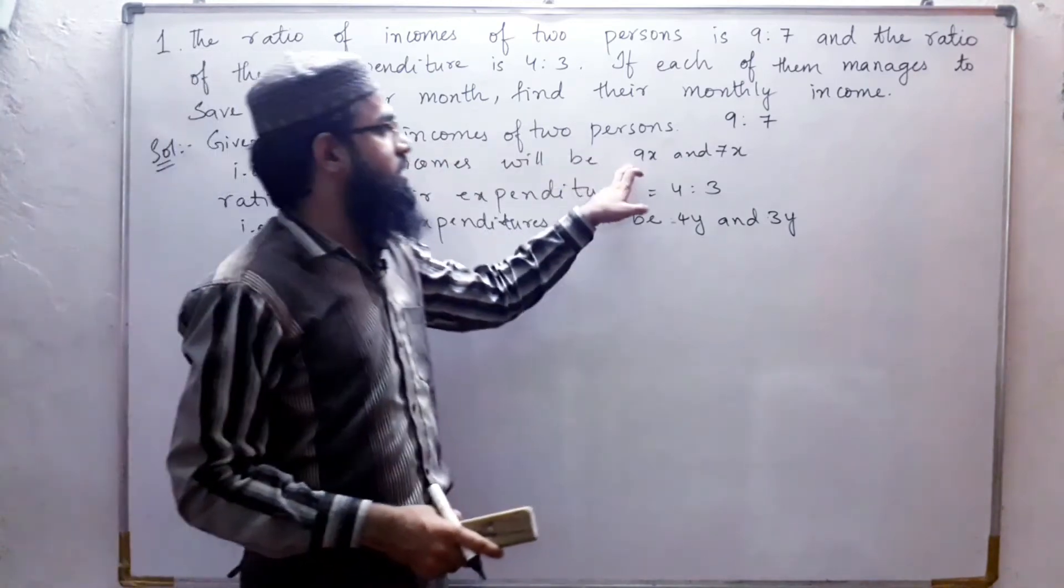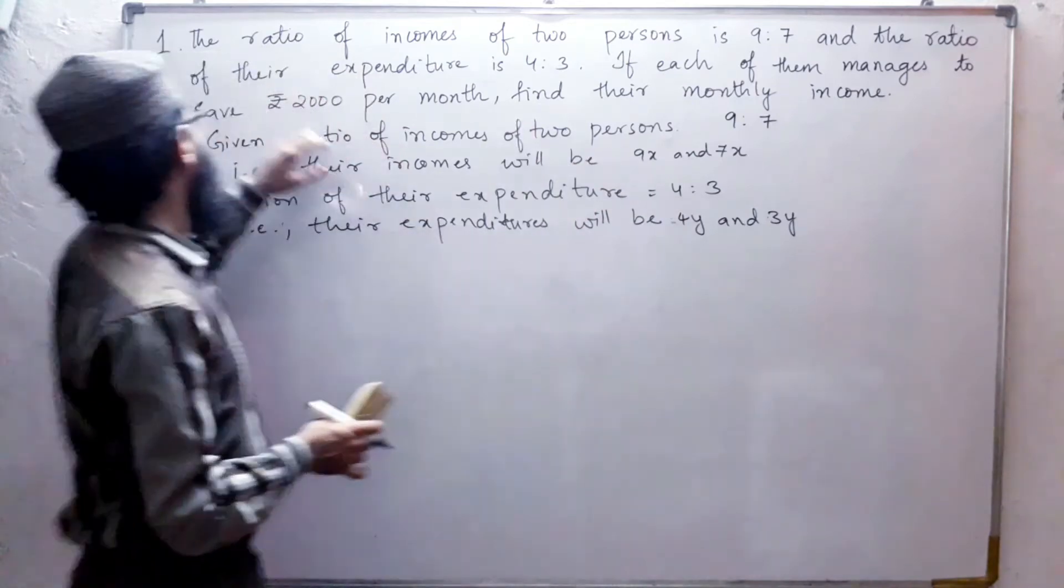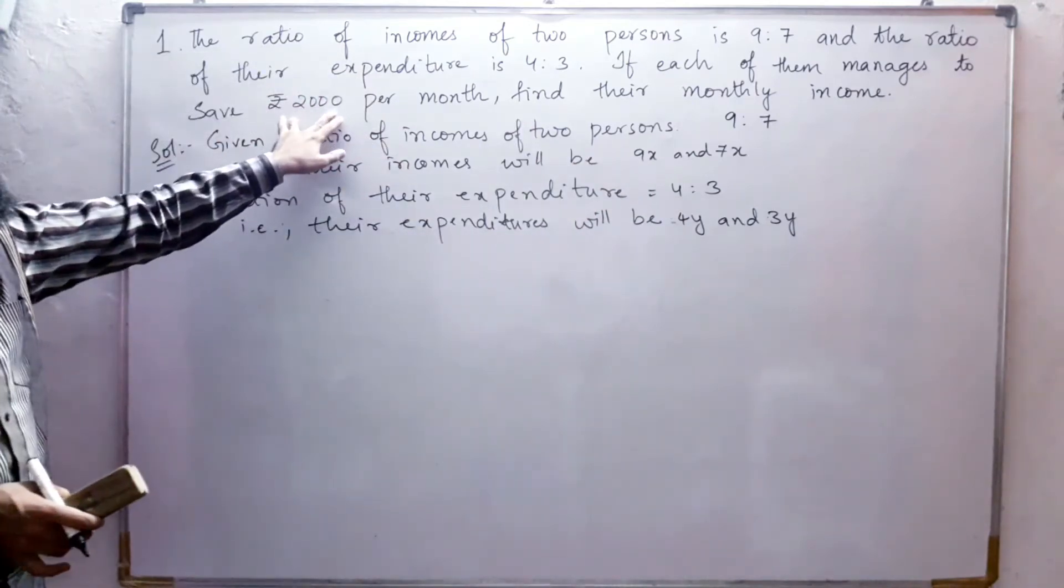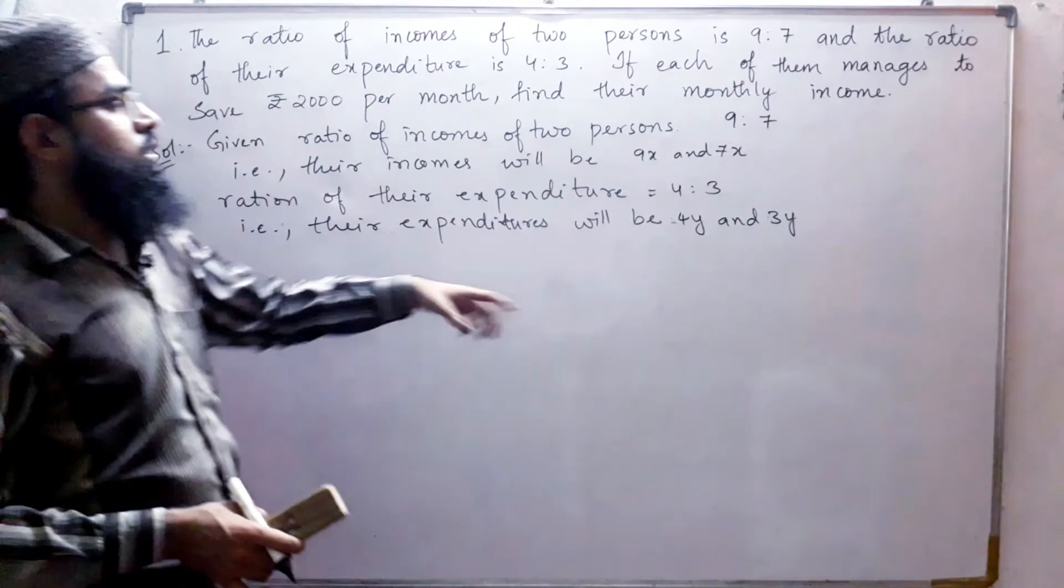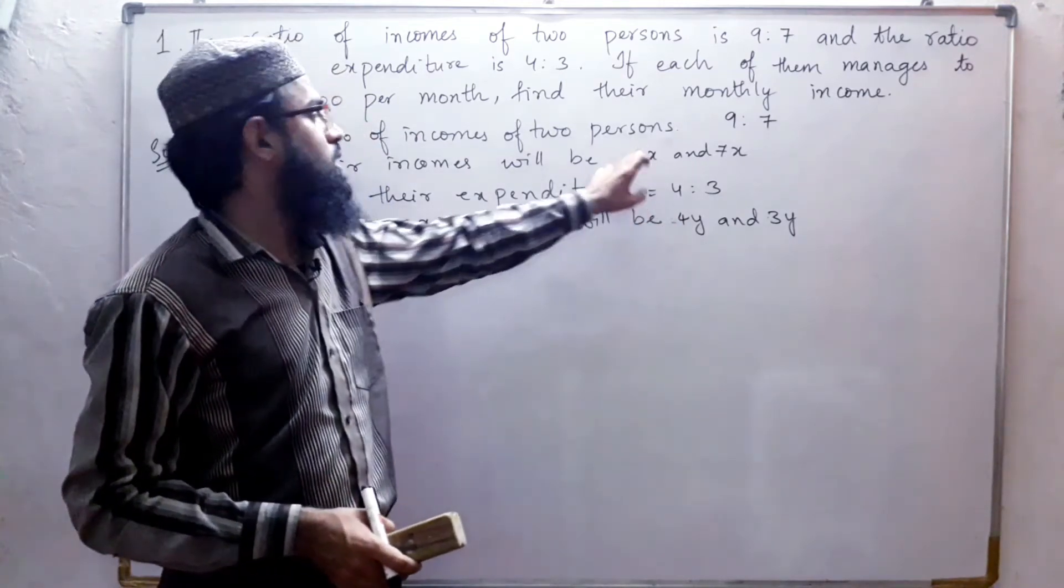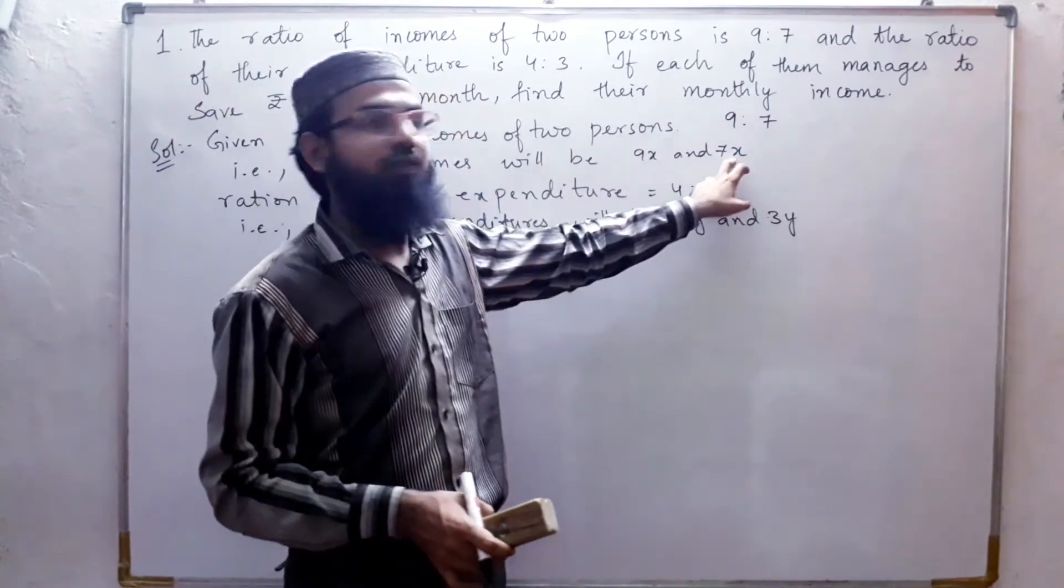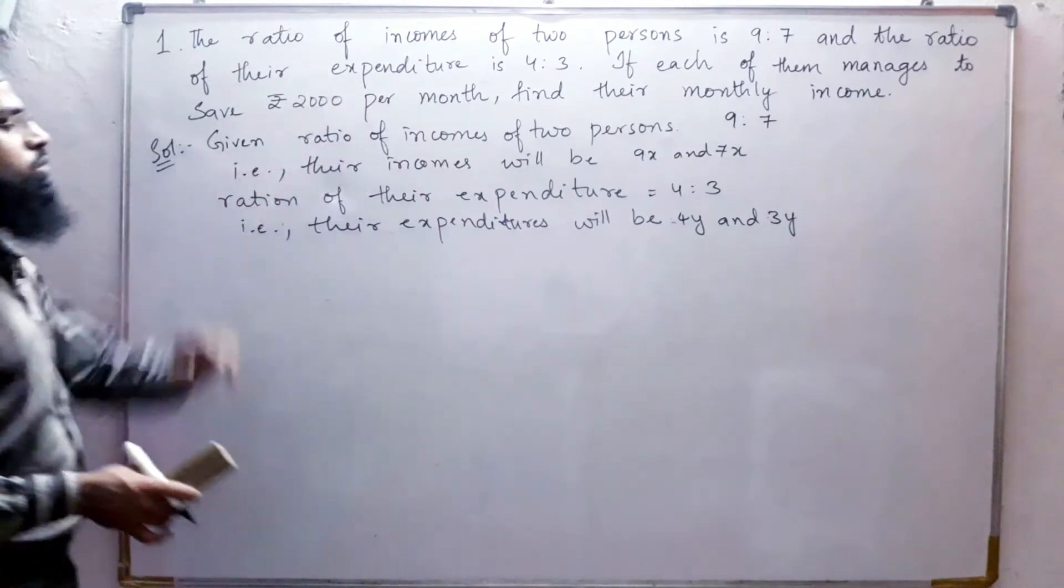If from income they are spending 4y, the remaining is 2000. The first person is spending 4y from 9x, saving 2000. If the second person spending 3y from 7x, it is also saving 2000 rupees.